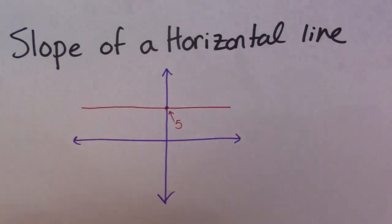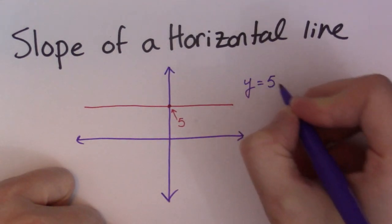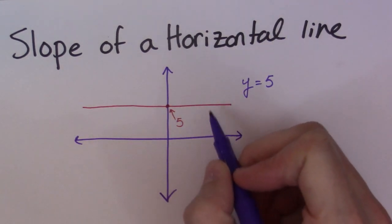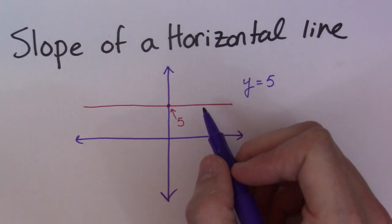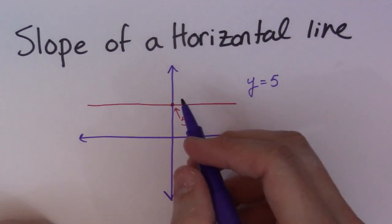Then, this guy has an equation of y is equal to 5. Because it goes through that particular number on the y axis. It doesn't matter what x is, y is always going to be 5, essentially. So that's the equation of a horizontal line. y is equal to whatever number it happens to go through.